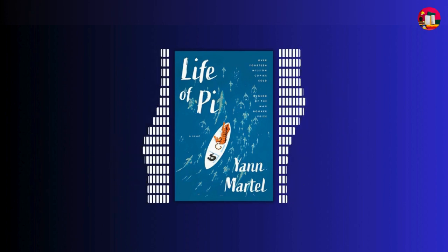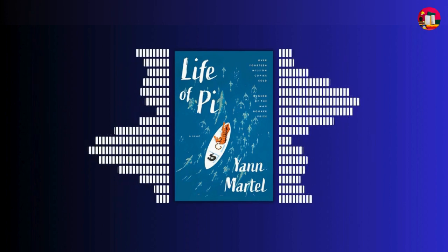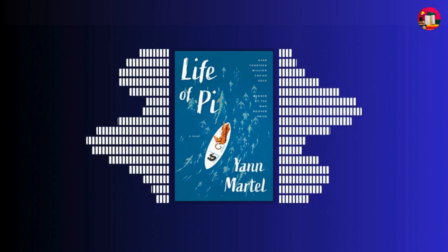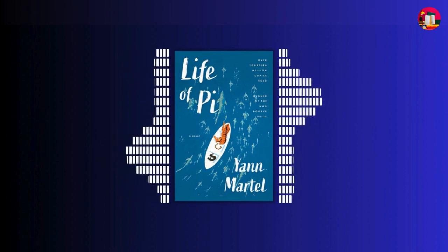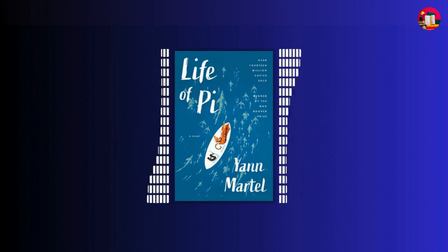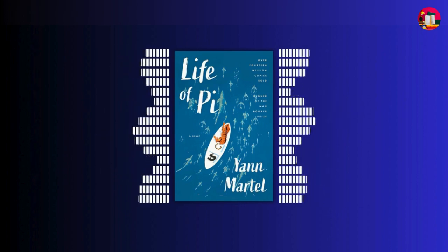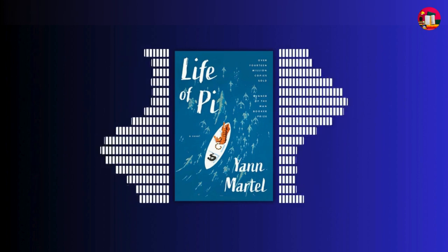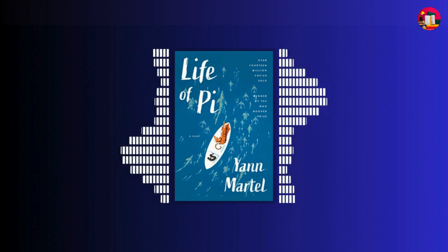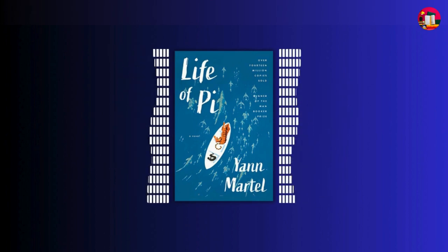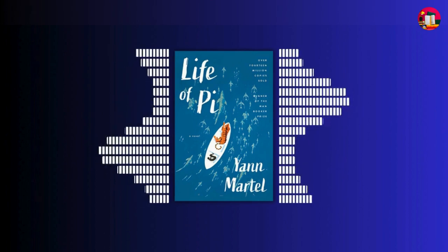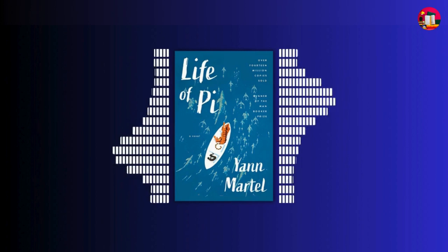However, Pi's ordeal is far from over. Upon reaching land, he is interrogated by officials who doubt the truth of his extraordinary tale. In a surprising twist, Pi recounts a second, more conventional version of his story, in which he shares the lifeboat not with animals, but with other survivors from the shipwreck, including a brutish cook who murdered his own crewmates out of desperation.